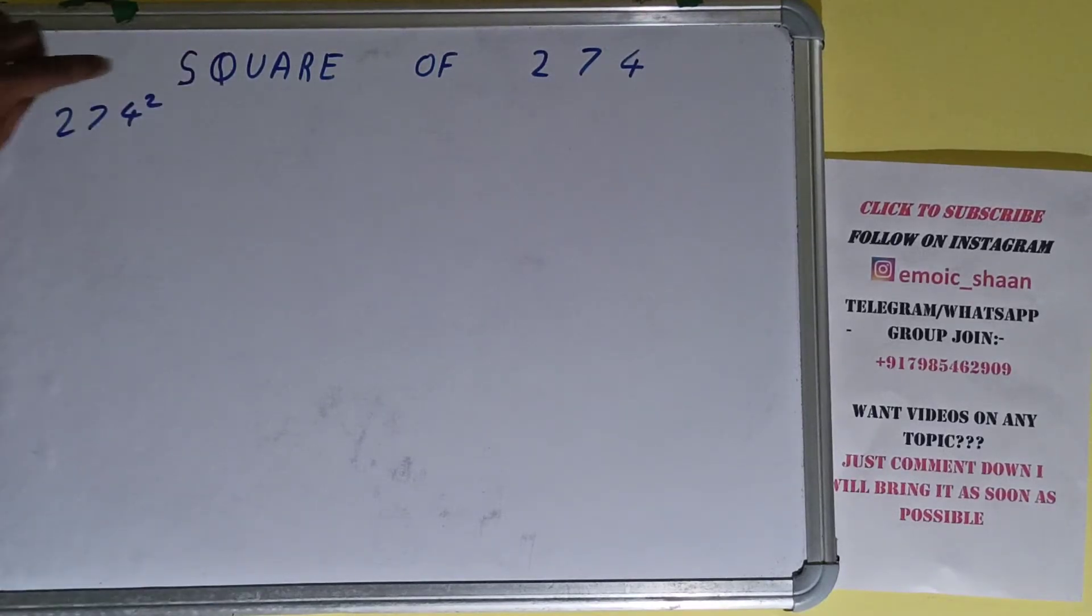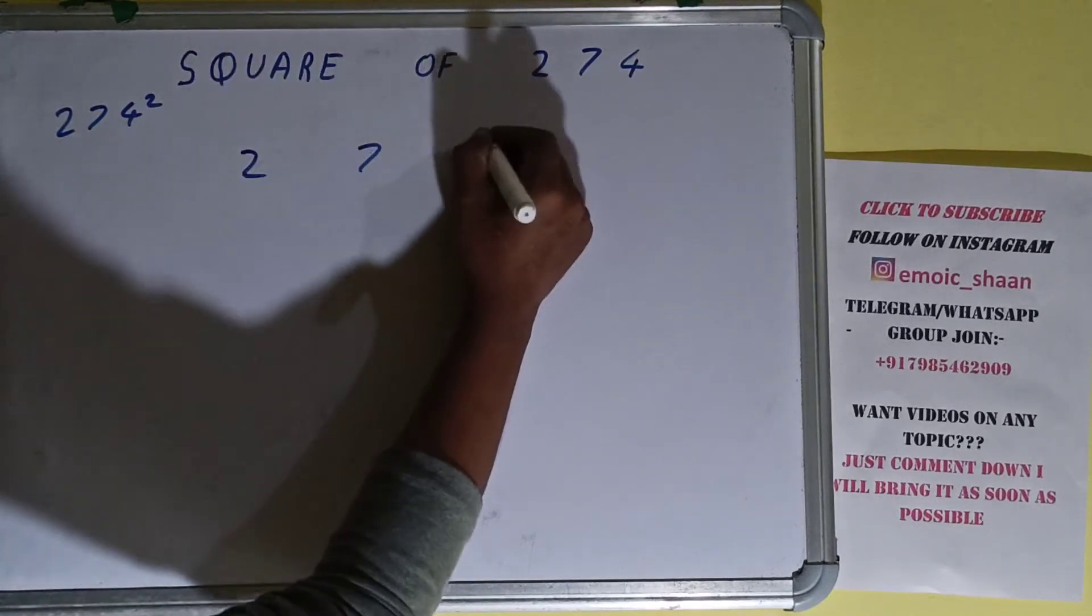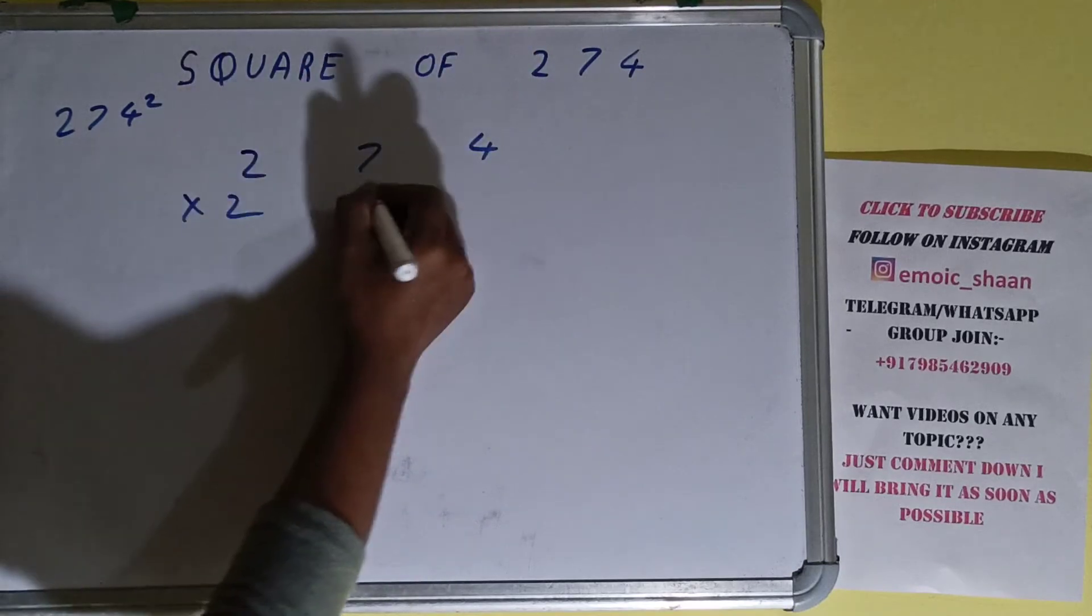Okay, and these have the same meaning. Now moving on to the solution, square basically means multiplying the number by itself. The number over here is 274, and to find the square of it we need to multiply it by itself, that is 274, and do the normal multiplication.